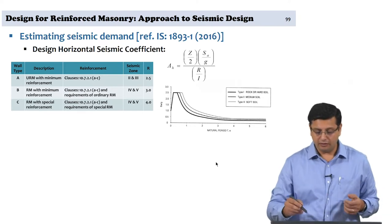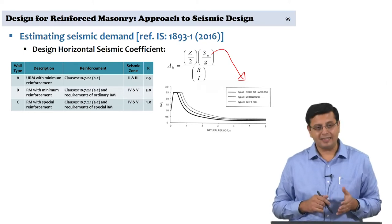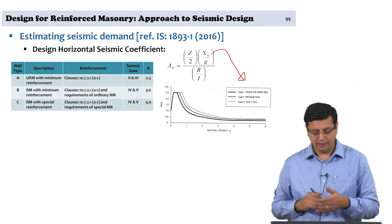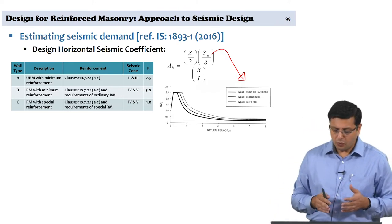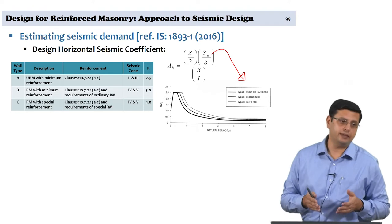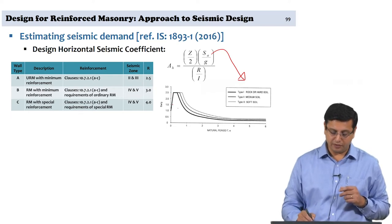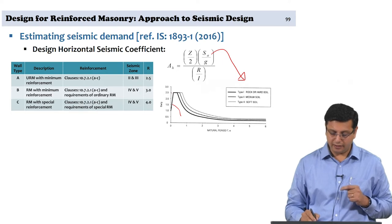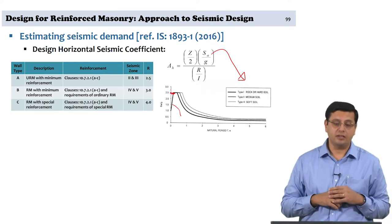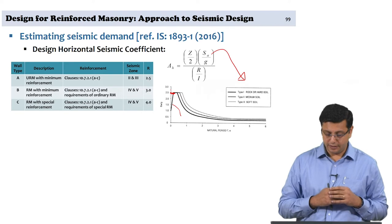For SA by G we reference the elastic design response spectrum. The spectrum shown is prescribed for response spectrum analysis. If you are using equivalent static analysis instead, the ascending portion of the response spectrum is not considered; you start with a value of 2.5 at time period T equal to 0.